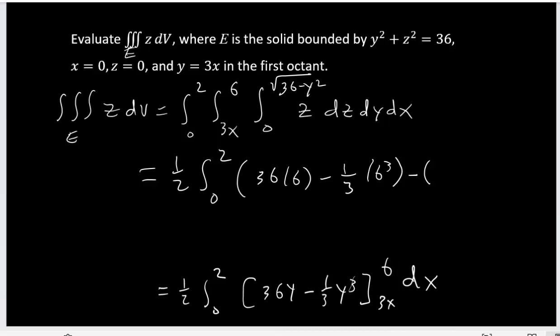Minus the lower limit is now 36, y replaced by 3x minus one third, y replaced by 3x to the 3, and then dx.